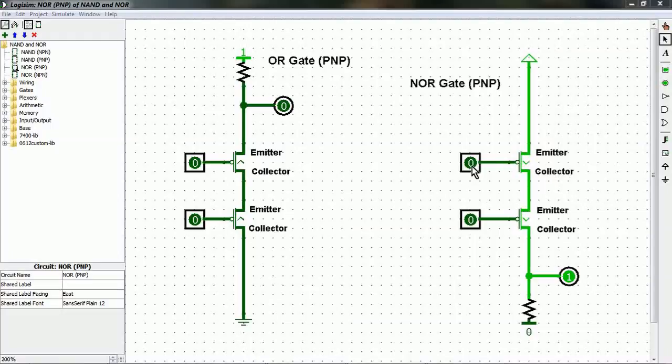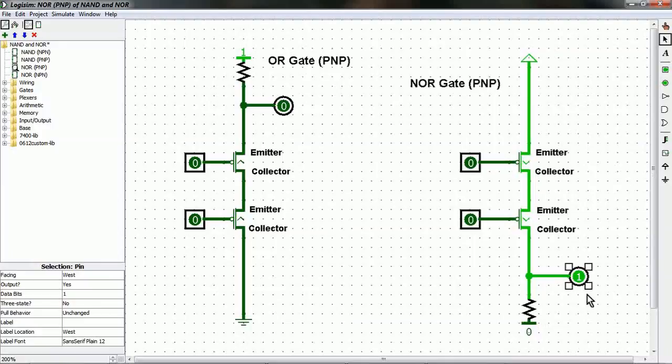So when both inputs are zero, what's gonna happen is our high state is gonna go right through, it's gonna overpower our pull-down resistor, we will have a 1 as an output. When we flip any one of these on, what's gonna happen is we're gonna cut away that connection. As a result, the pull-down takes effect, and we're gonna get zero at our output.